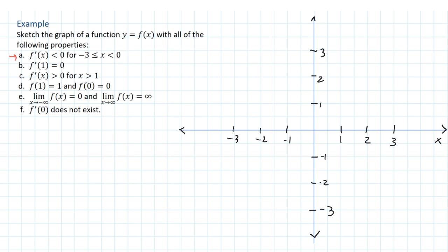Now, we are told that the derivative is negative between -3 and 0. So basically, that means from about here over to here, our function is going to be decreasing. It has a negative derivative.